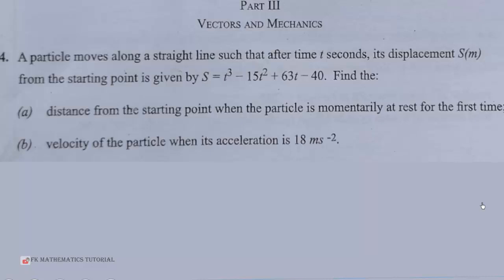its displacement s(m) from the starting point is given by s = t³ - 15t² + 63t - 40. Find the distance from the starting point when a particle is momentarily at rest for the first time.